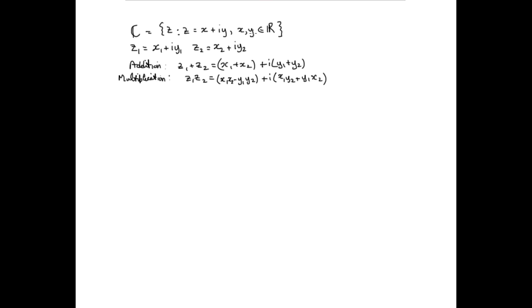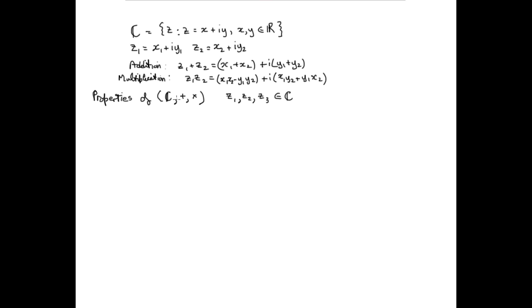So we have the set of complex numbers, the definition of addition, and the definition of multiplication. We're going to look at the properties that these two operations have — we've seen and used these in the previous videos. We'll write this as a set with two operations and look at it as an algebraic structure: a set of objects combined using binary operations. We'll assume z1, z2, and for some properties a third complex number z3, are any complex numbers from the set C.